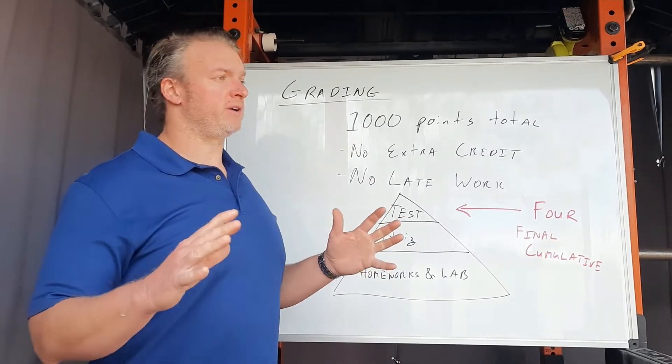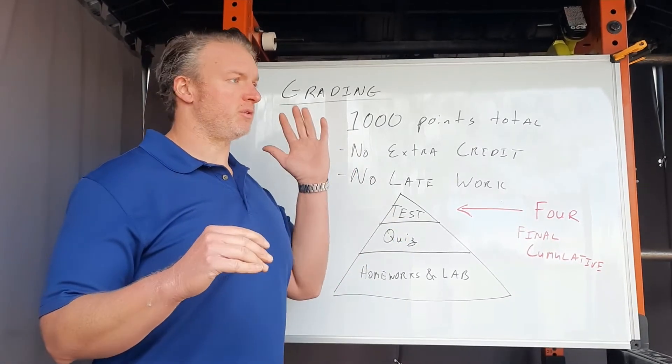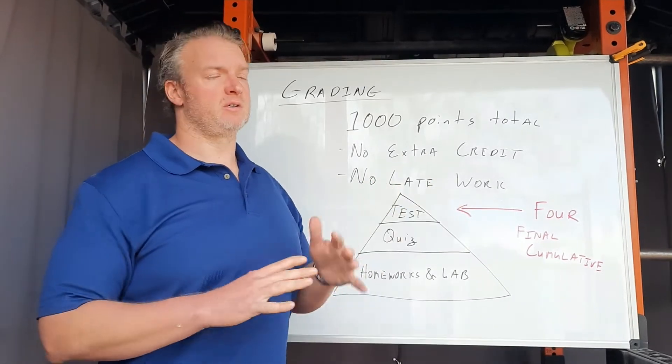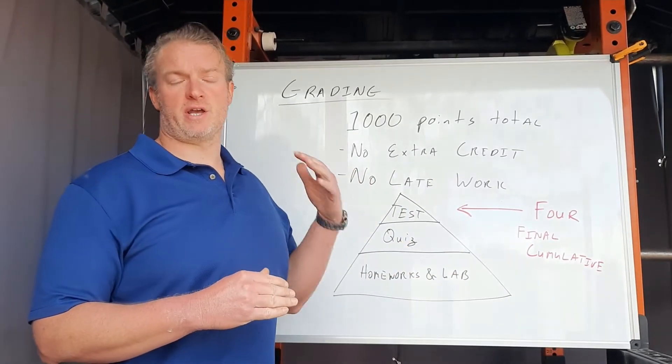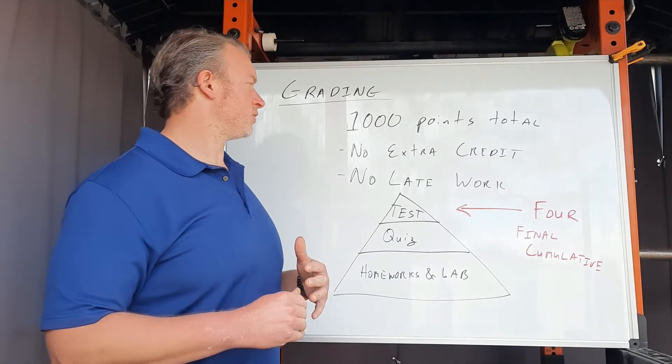There's a thousand points total. Your final grade is going to be determined out of the points you earn, the sum of, divided by a thousand. So it's really easy to see where you're at. 900's an A, 800's a B, and so on and so forth right there.